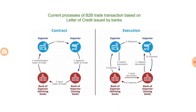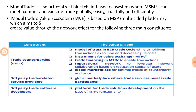As you can see, it is already a very complex system involving two banks from two different countries, and any blockchain enthusiast would understand that blockchain could do it in a much simpler way — and that is pretty much what ModulTrade is trying to do. ModulTrade is a smart contract blockchain-based ecosystem where MSMEs — medium and small enterprises — can meet, commit, and execute trade globally, easily, trustfully, and efficiently. MSMEs are the biggest hit when banks charge such commissions and fees, because they work on low margins and small working capital.